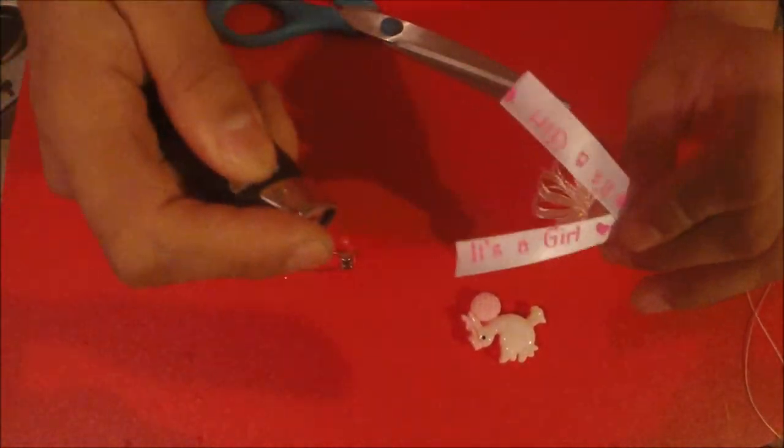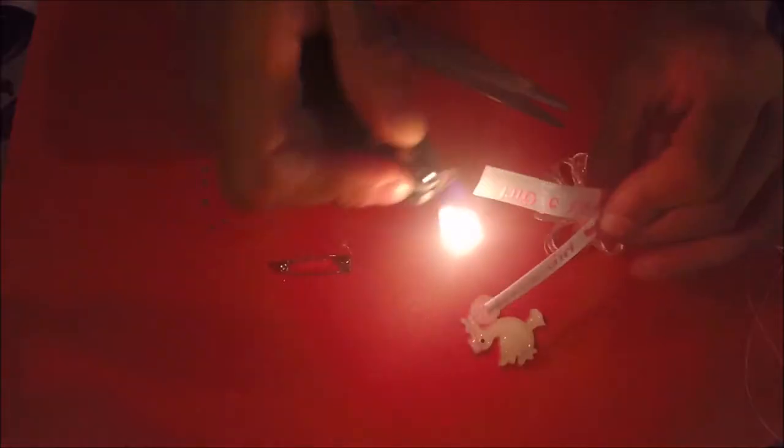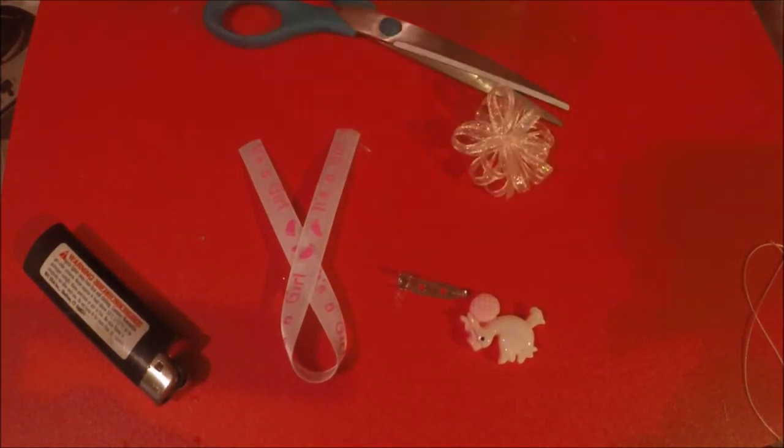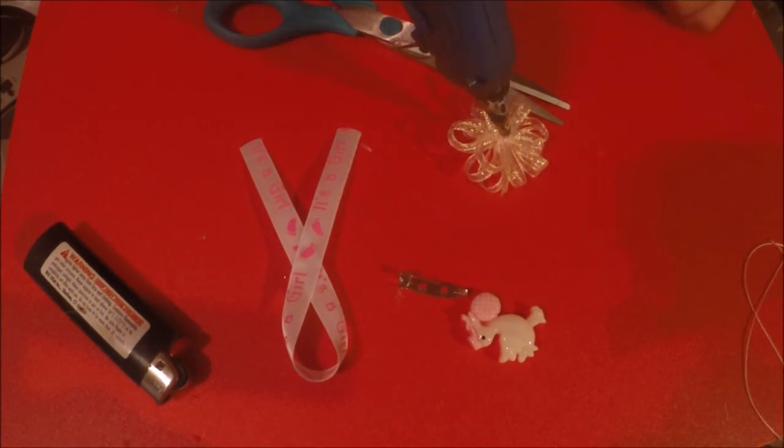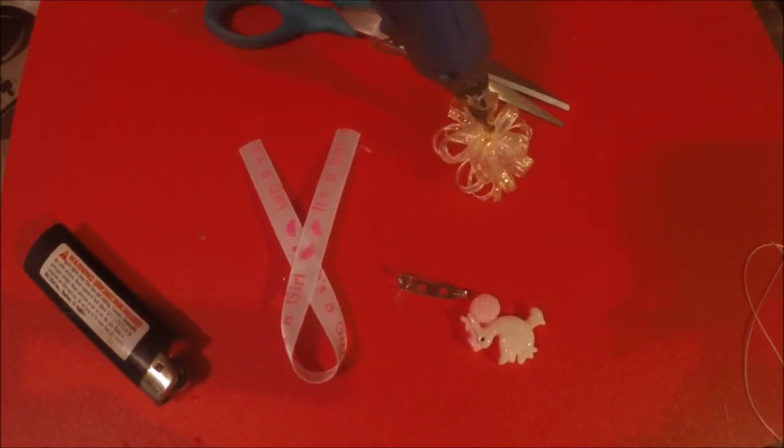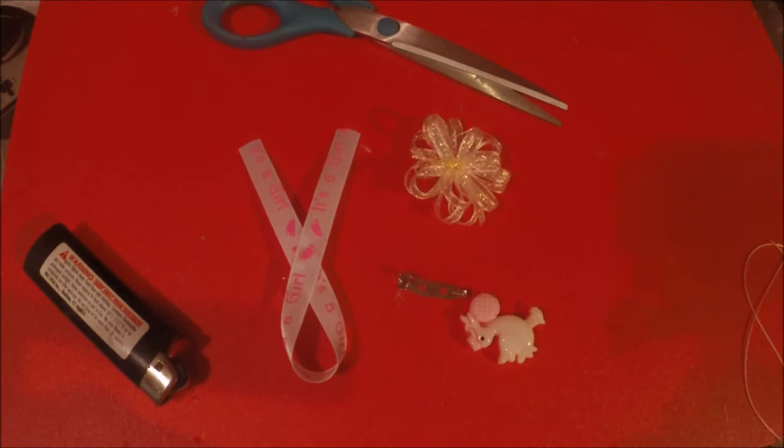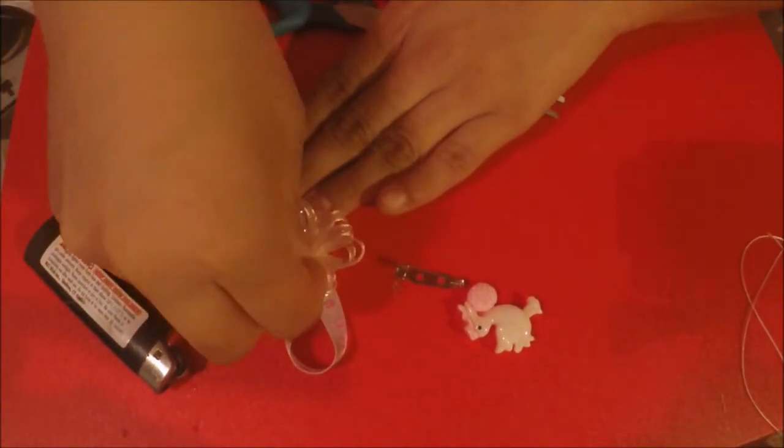Then we seal our ends with our lighter. Then we put a dot of glue, some glue on it, on the back and then paste it right there.